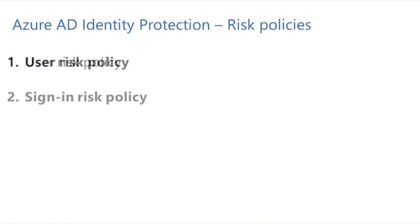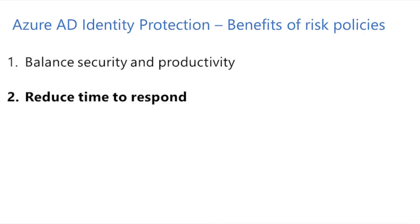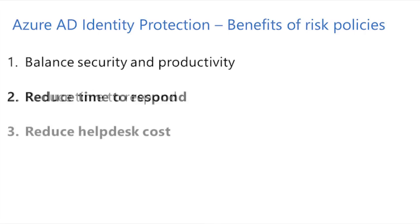Customers can use these risks to set up automated remediation policies — for example, a user risk policy or sign-in risk policy. These risk policies help organizations in multiple ways. Number one, they balance security and productivity. For example, not all sign-ins are challenged with MFA; however, if risk is detected on a sign-in or a user, we will challenge a sign-in based on these policies. Number two, they reduce the time to respond after a compromise. Number three, they reduce helpdesk cost — once you set up the policies, no manual intervention is required.